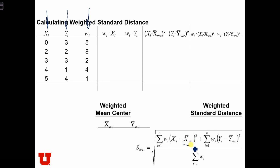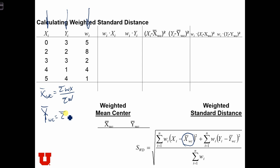The first step is to calculate the weighted mean center. The weighted mean center for x is equal to the sum of the weighted x's over the sum of the weights, and the weighted mean center for y is equal to the sum of the weighted y's divided by the sum of the weights. So we're going to calculate the weighted x's and the weighted y's.